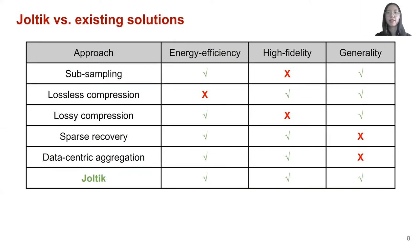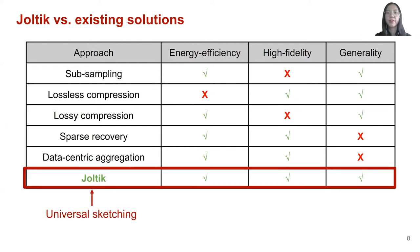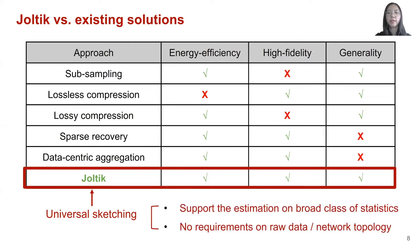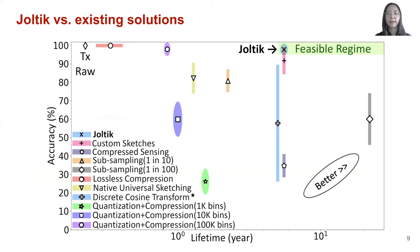To this end, we present JOTIC, a framework to enable energy-efficient, future-proof analytics on LPWANs. JOTIC is built upon recent theoretical advances in universal sketching. Universal sketching algorithm can support the estimation on a broad class of statistics and has no requirements on the raw data and network topology. This property enables the JOTIC system to support general, accurate, and energy-efficient analytics on sensors. Compared to prior approaches, JOTIC provides better energy-accuracy trade-off for future-proof analytics.